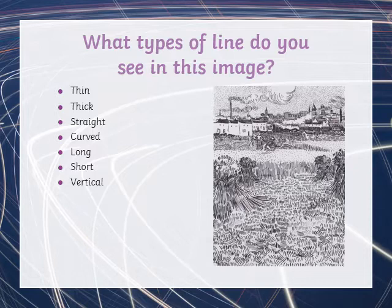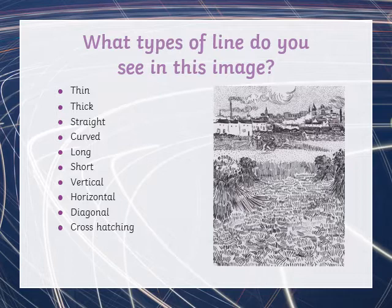Vertical — those are lines that run from the top of the page to the bottom of the page. We've got some short vertical lines at the back of that first field. Horizontal lines run across the page from left to right. I can see some horizontal lines again in the roofs of those houses. Diagonal lines. Cross hatching — cross hatching is when we've got some lines going in different directions over the top of each other. At the front of the picture we have lines going in different directions quite close to each other, but they're not overlapping, so I'm not sure I can quite see cross hatching in this picture.